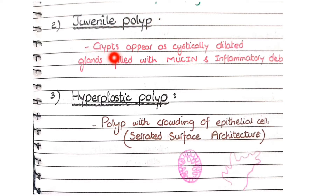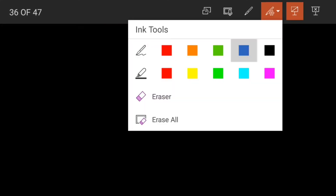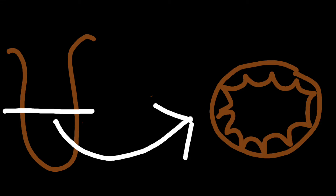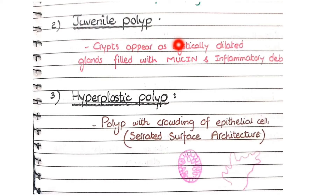In juvenile polyps, the crypts appear as cystically dilated glands filled with mucin and inflammatory cells. Normally the epithelium of the intestine is in the form of crypts, but in juvenile polyps these crypts become large, cyst-like glands filled with mucin and inflammatory debris.